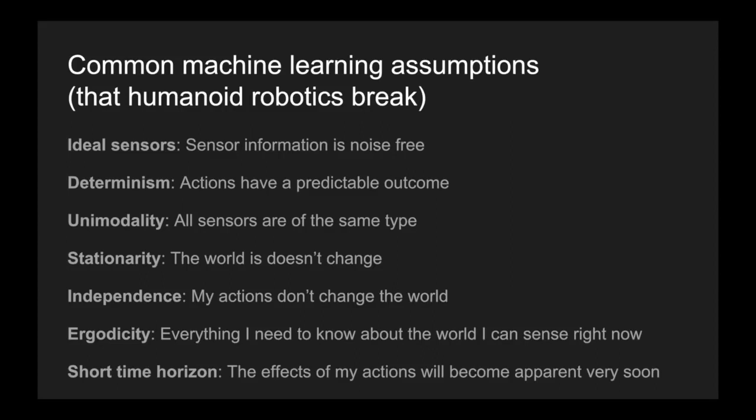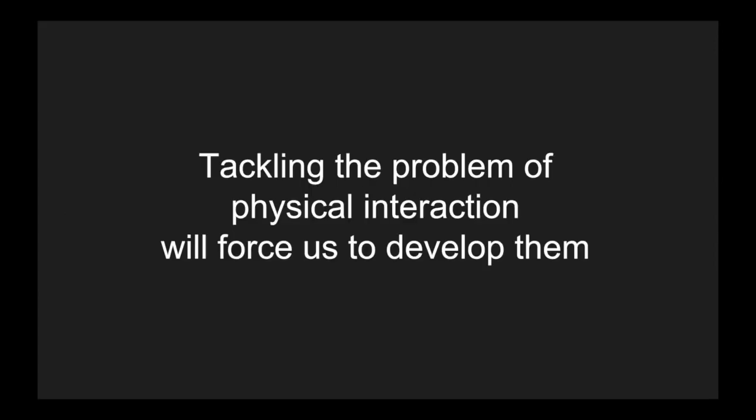So, one thing that all of these assumptions have in common is that they do not hold when you're working with humanoid robotics, or in fact, any robot that's physically interacting with the world. So, my proposal is that focusing on physical interaction is a great way to force us to confront these assumptions, to find out which ones we can bend, to find out which we can avoid altogether, and to drive us to create algorithms that are less fragile and able to accommodate a much more general set of tasks that will then take us one step closer to human level intelligence.